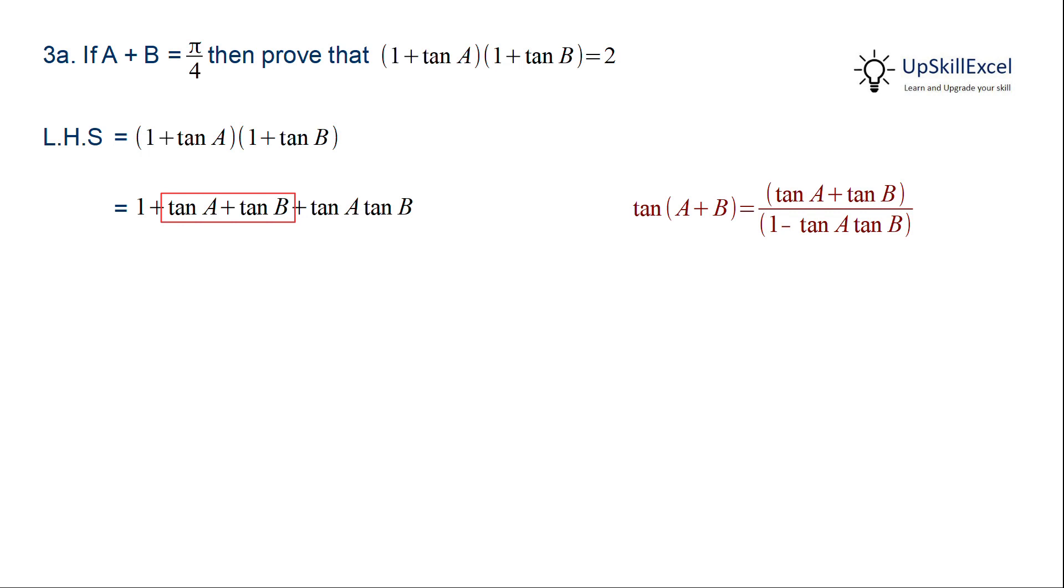If we focus on the second and third term, that is tan A + tan B, we realize that we can convert it into tan(A + B). The missing term here is 1 - tan A tan B in the denominator, so we will multiply both numerator and denominator by 1 - tan A tan B.